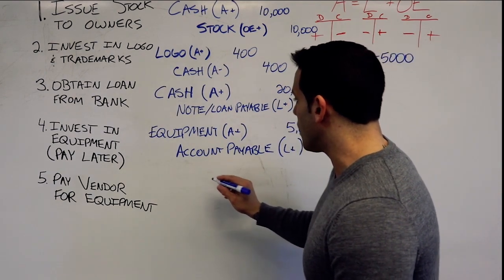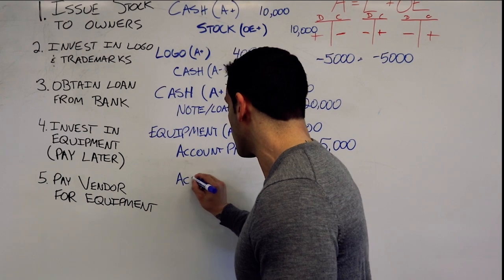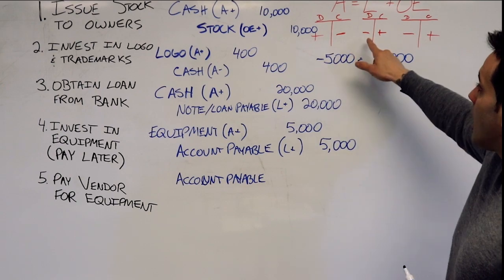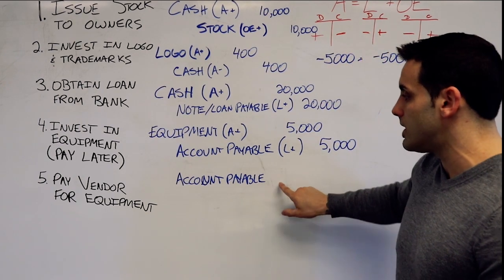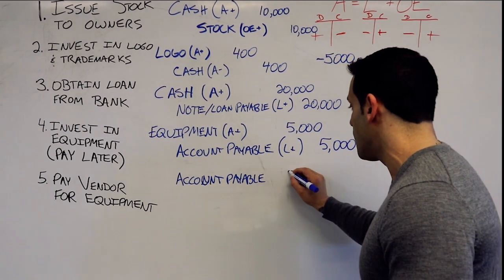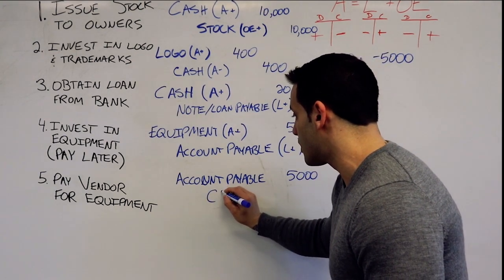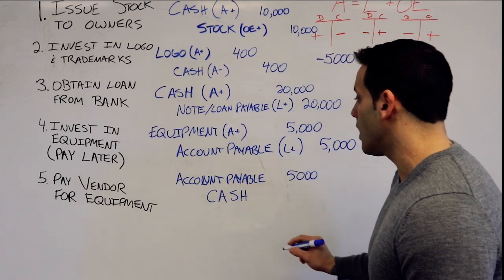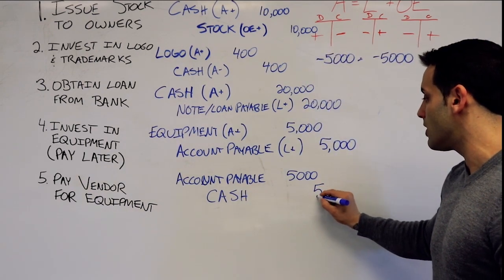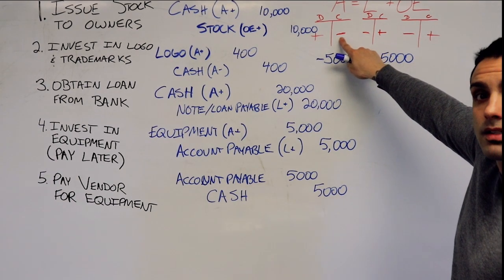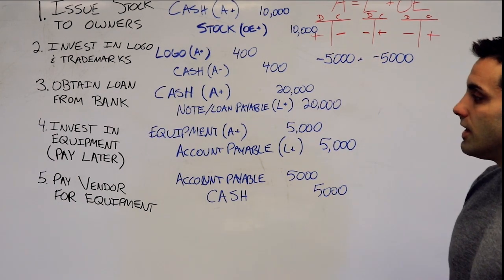So our accounts payable, a decrease to a liability is a debit. So we're going to debit accounts payable for that $5,000, and we're going to credit cash for $5,000 because decreases in assets are a credit. And there's our entries.